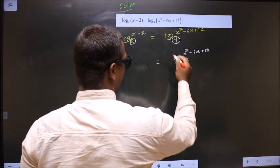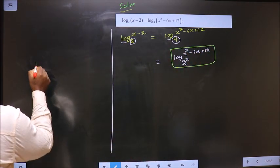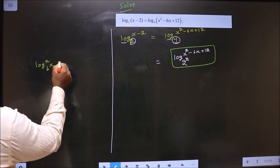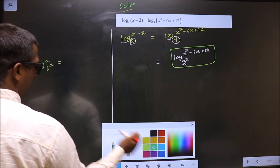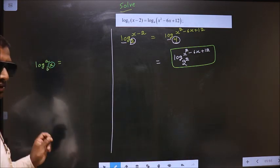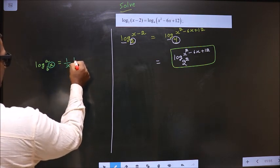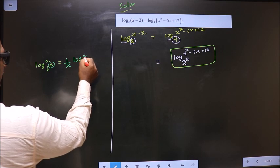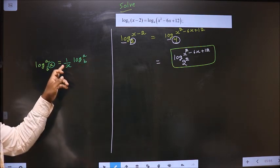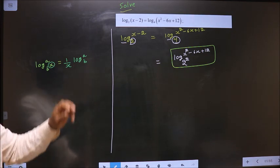Now I will apply this formula: log base (b^x) of a. Whenever the base has a power, the power comes into the denominator, making it (1/x) log base b of a. So: base has got the power, the power will come in the denominator — giving (1/x) log base b of a.